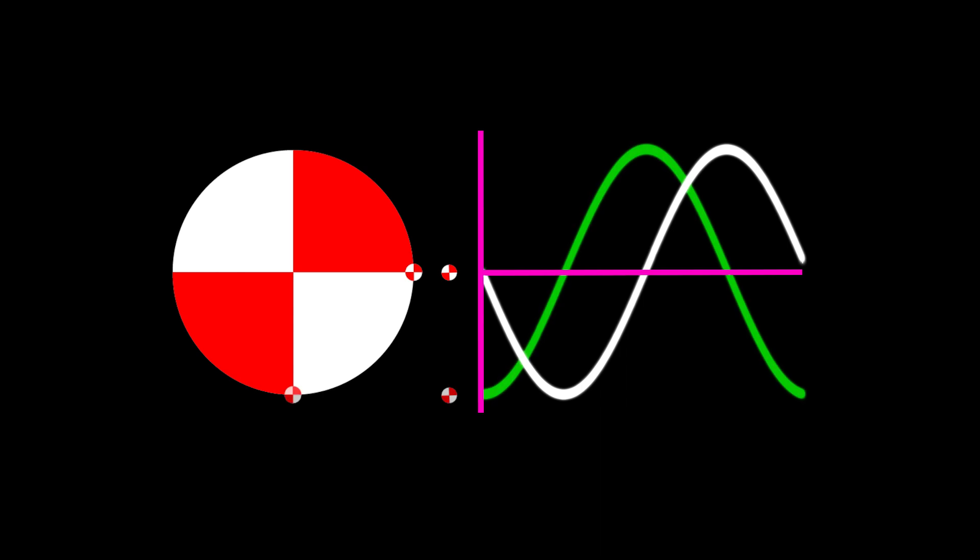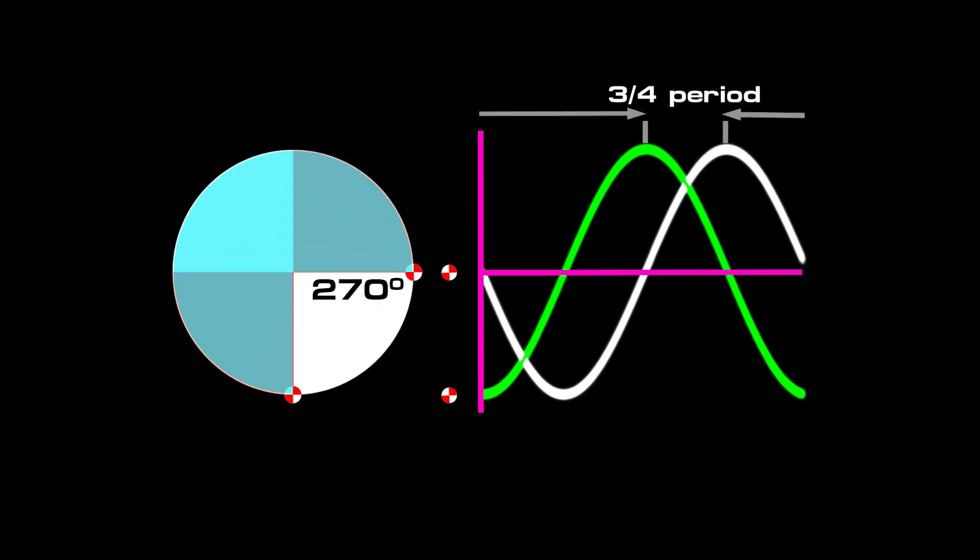Looking at another situation, we apply a 90 degree phase lag producing a quarter period time delay. This is essentially equal to a phase lead of 270 degrees with three quarter period time shift.